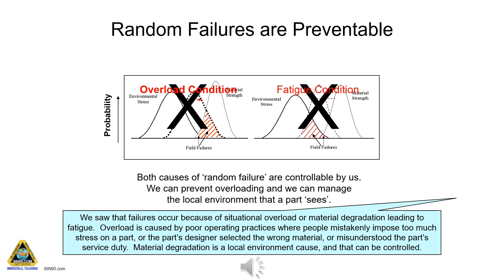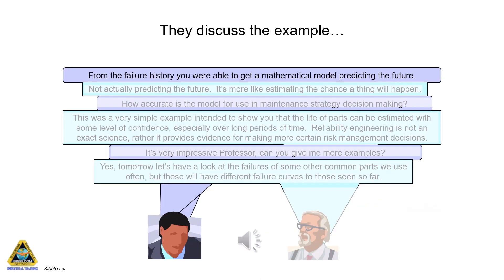It is possible that different equipment operators have different stress distributions in different environments — this is why you never buy a car used previously for hire, like Avis. You don't know how much overloading was done by previous users. From the failure history, you were able to get a mathematical model — but not actually predicting the future, more like estimating the chance a thing will happen.